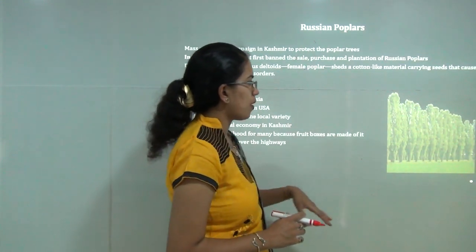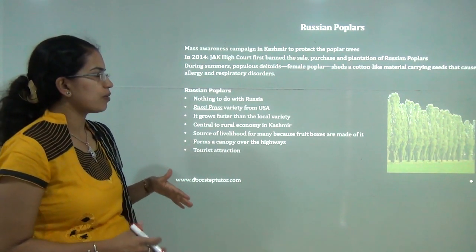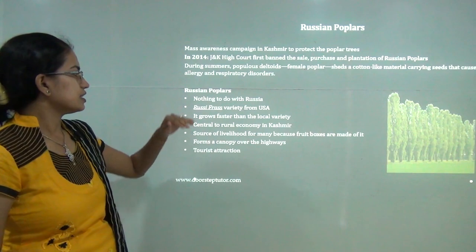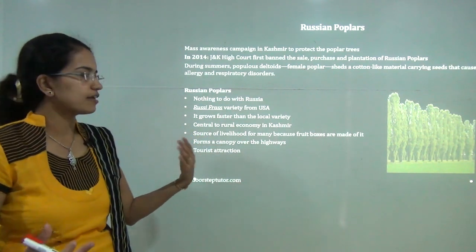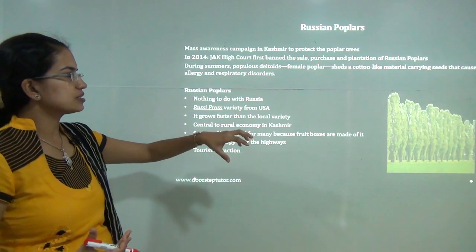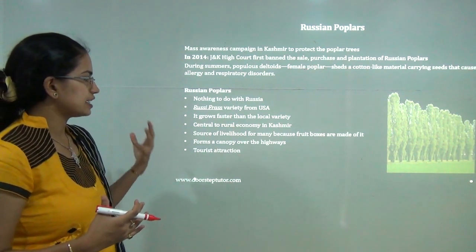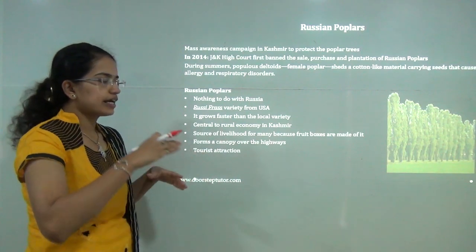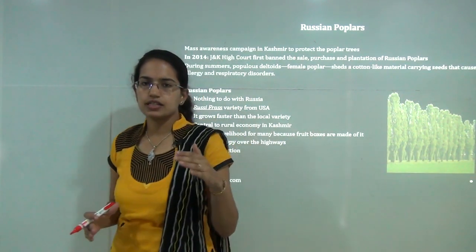Jammu and Kashmir is known for its poplar trees; however, in recent years there has been an invasion by Russian poplars. Despite the name, these have nothing to do with Russia — the name comes from 'Rusi frasa,' a variant from the United States. These Russian poplars grow much faster than local poplars. The female poplars produce deltoids and shed cotton-like material that harms the respiratory tract and causes allergies. While used for fruit boxes and creating highway canopy, the invasion of Russian poplars has severely affected domestic poplars in the region.